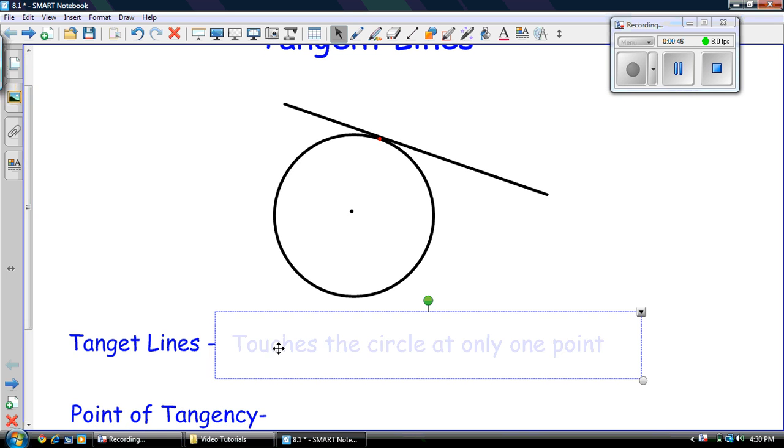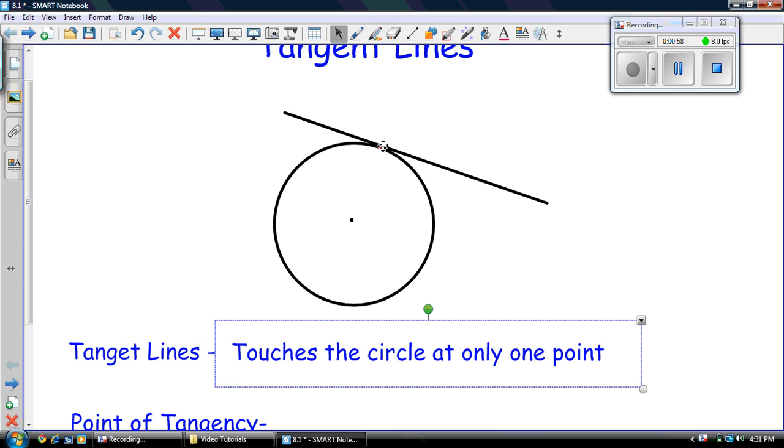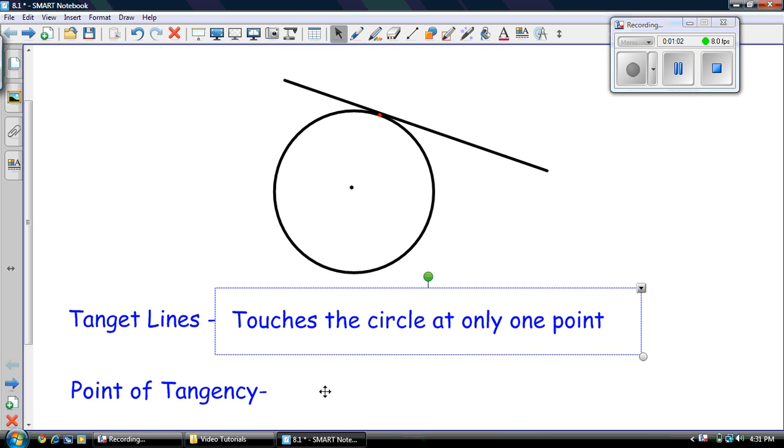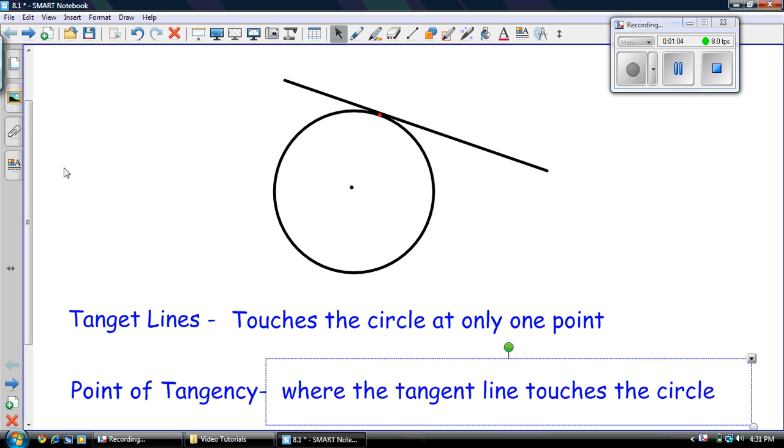So definition of a tangent line: touches the circle at only one point, as opposed to other lines that go across the circle and touch it at two points. Now this red dot here is also something very special. That red dot is called the point of tangency, and that's where the tangent line touches the circle.